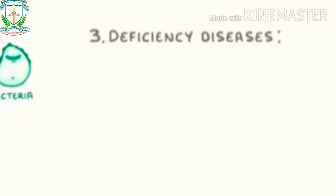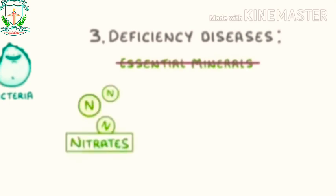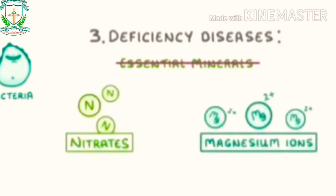Just like humans, plants can catch diseases from a range of microorganisms including fungi, bacteria, and viruses, but also from larger organisms like insects. They can also get deficiency diseases, which can happen if they don't get enough essential minerals like nitrates or magnesium ions.